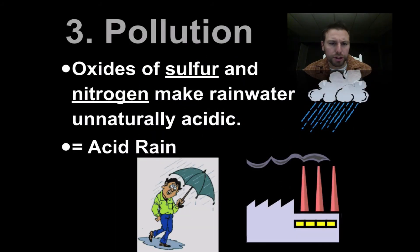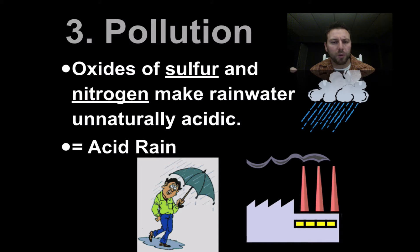Hello ladies and gentlemen, welcome back to another screencast by your earth science teacher Mr. Stano. Over the last few screencasts we've been talking about weathering — physical weathering and chemical weathering. We're going to continue talking about chemical weathering, working into pollution. When we have nitrogen compounds or sulfur compounds in our atmosphere, they react with water droplets to produce acid rain.